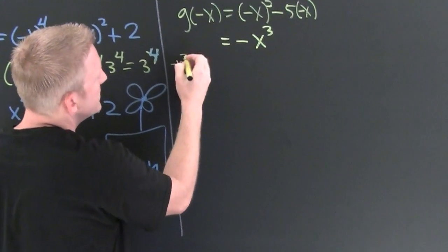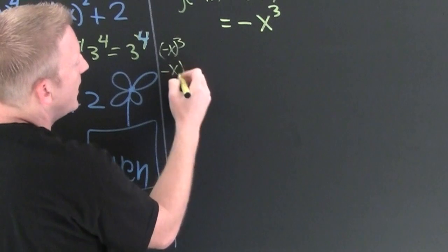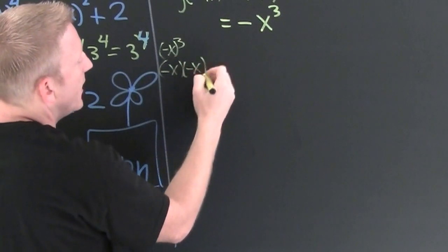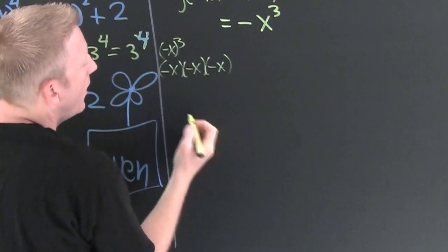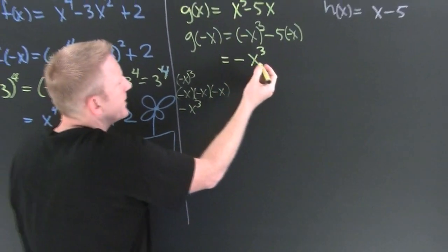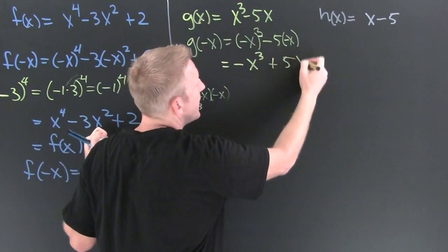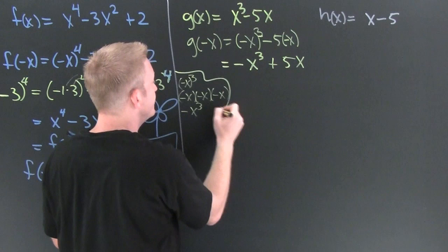Why? Fine. I will. If you had minus x to the third, that's going to be minus x times minus x times minus x. Okay. Minus and minus minus make minus x to the third, which is what I wrote right there. Okay. Minus and minus make minus plus five x.